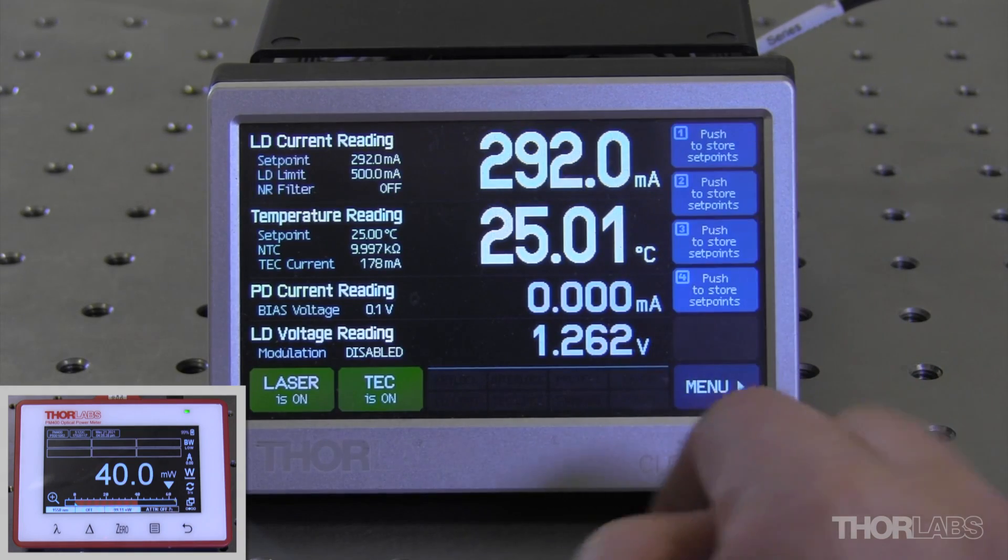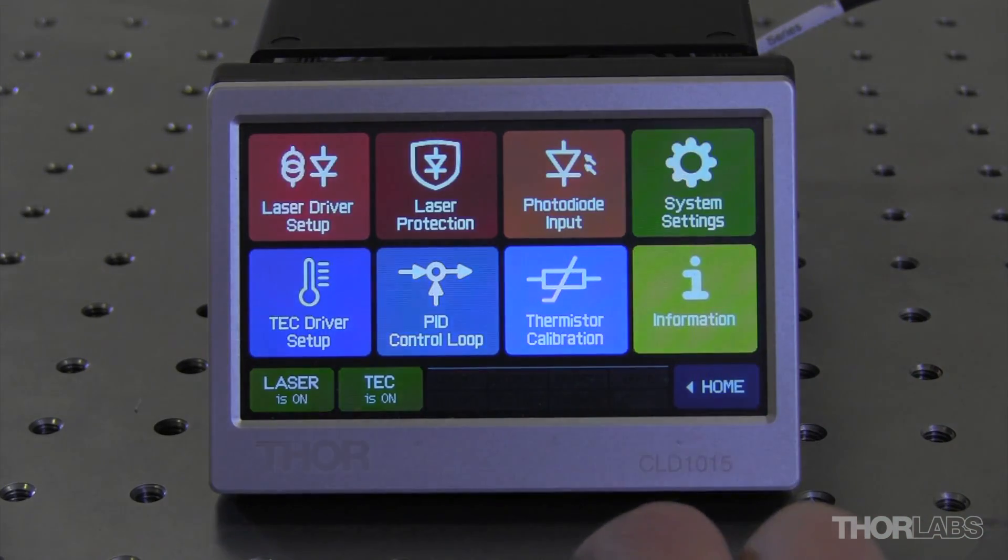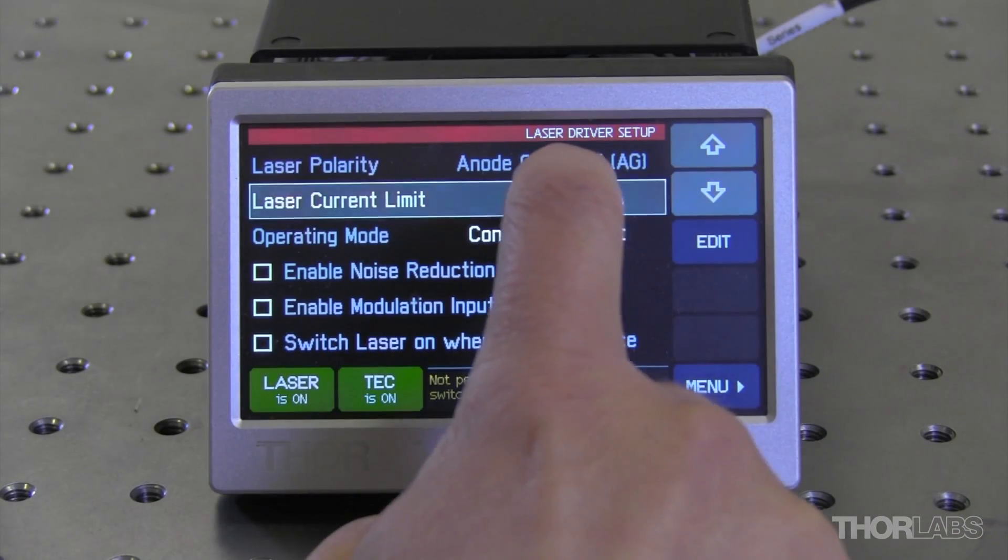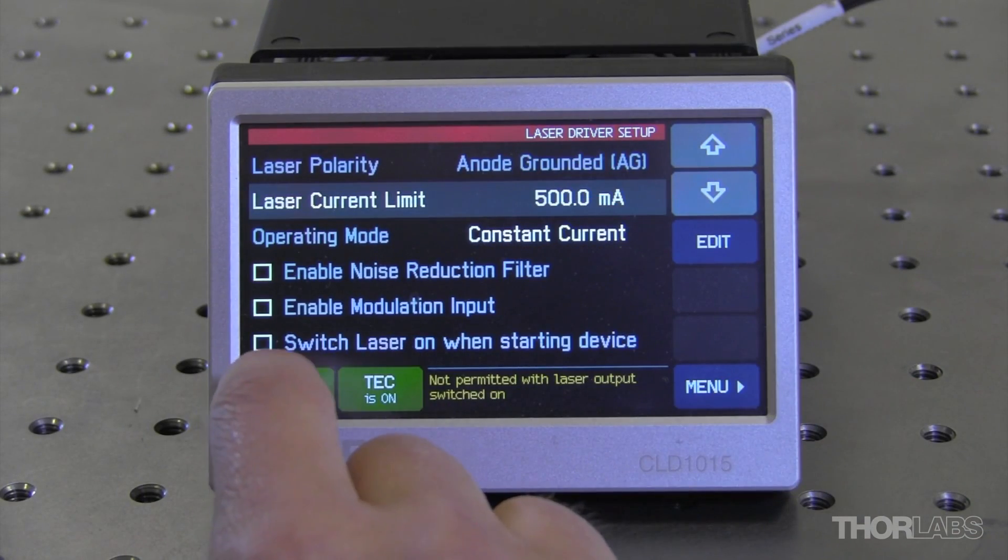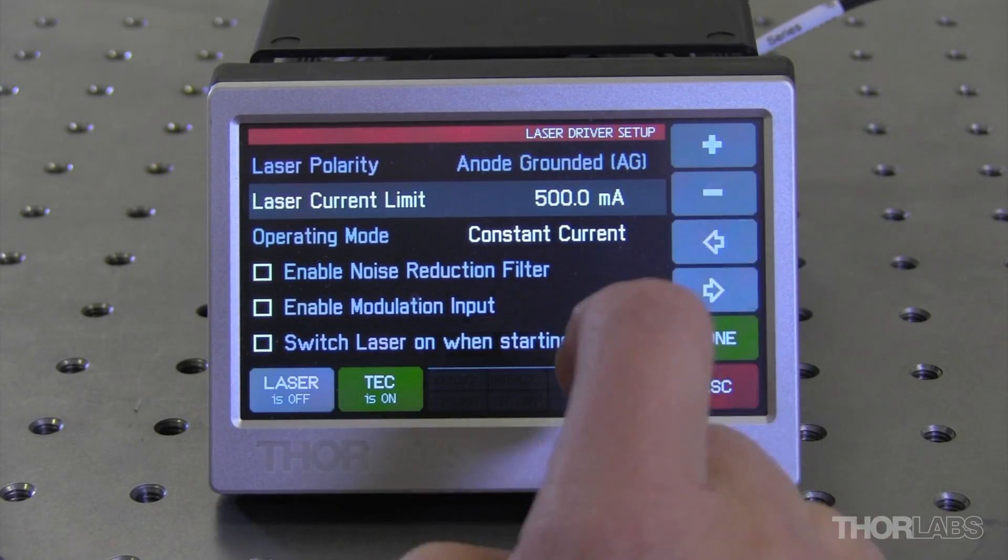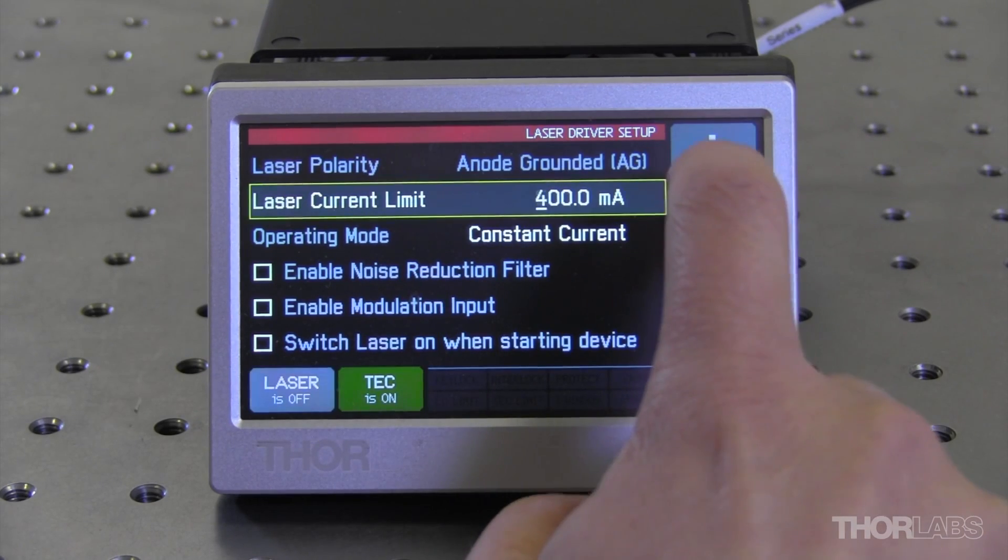Once I've determined that current, I'll go back into the settings. And I'll change my current limit. I'll make sure my laser is off. And I'll change my current limit to match the current that provided the maximum optical power from my spec sheet.